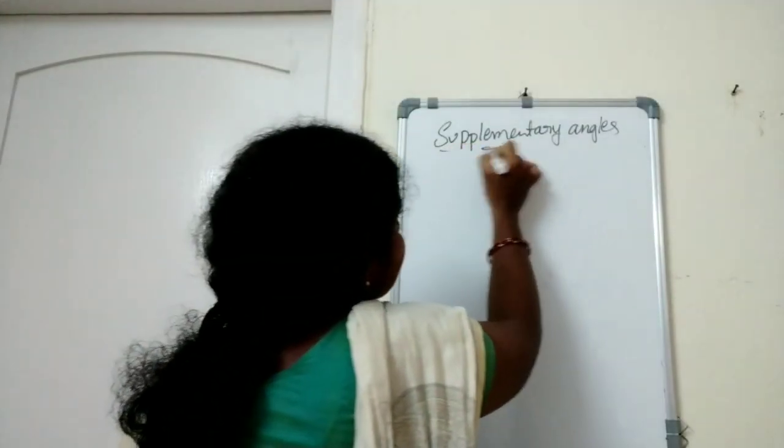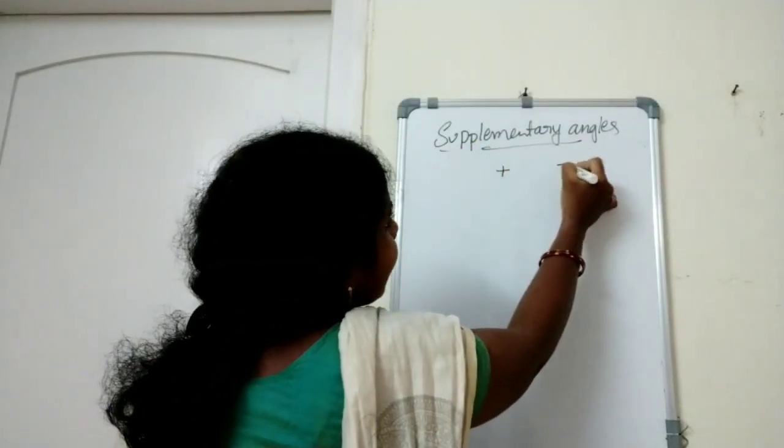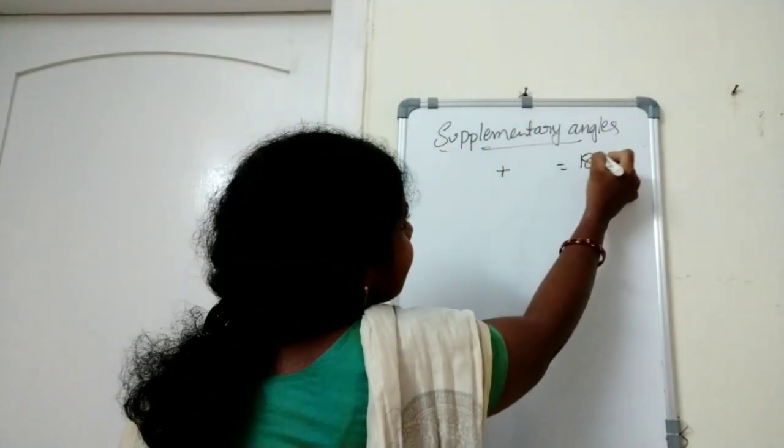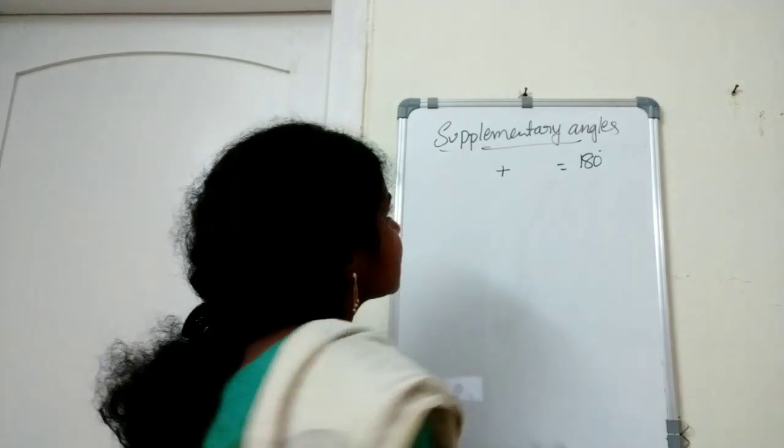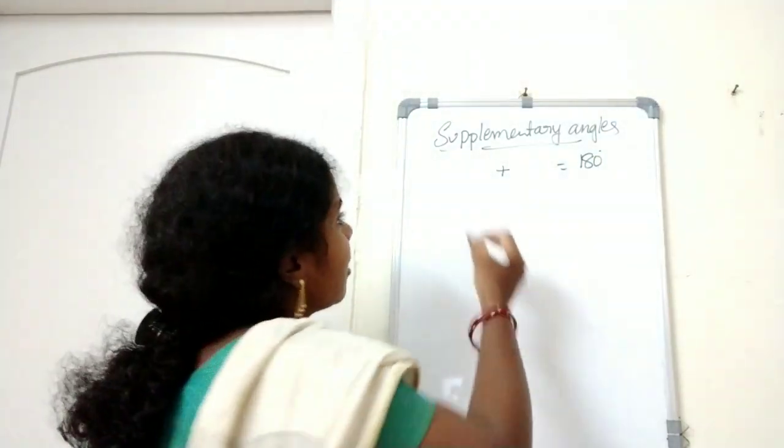Suppose the sum of two angles is 180 degrees, then those two angles are said to be supplementary angles.